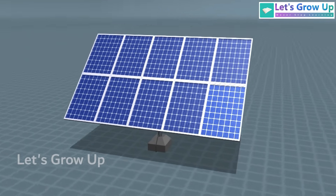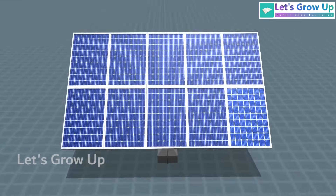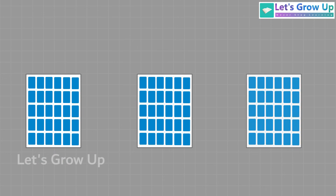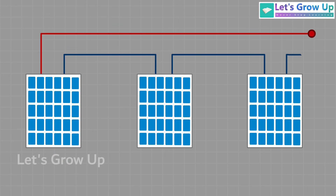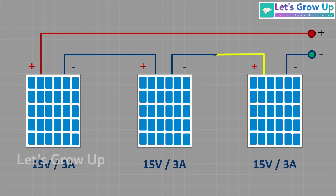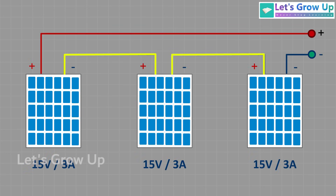In this configuration, the positive terminal of one panel is connected to the negative terminal of the next panel, creating a chain that increases the voltage output of the array.